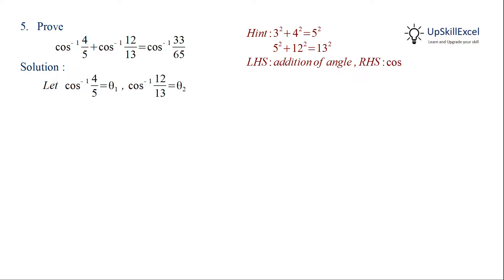So let's start with assuming that cos inverse 4 by 5 is equal to theta 1 and cos inverse 12 by 13 is equal to theta 2. From this we can find the sin theta 1 and sin theta 2.